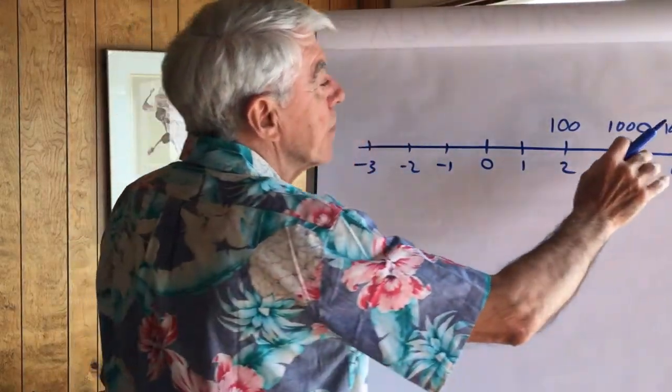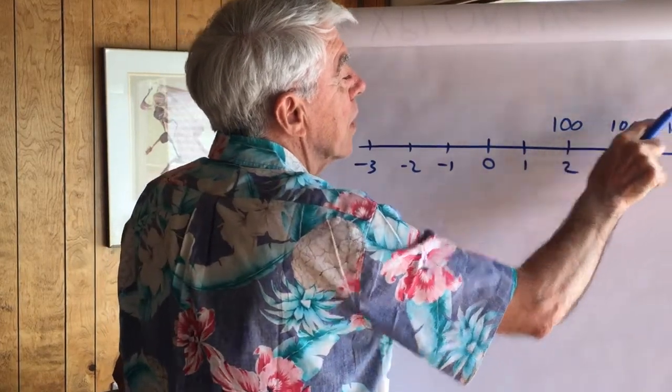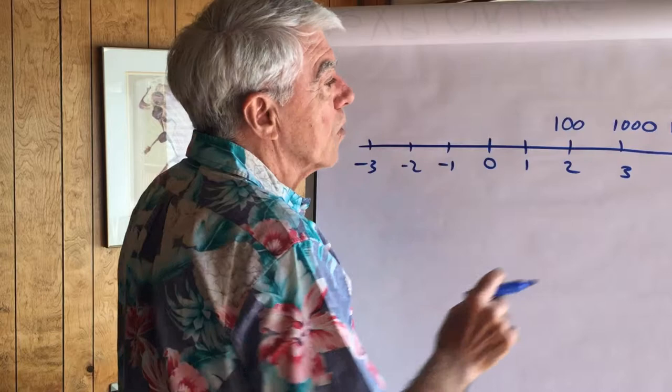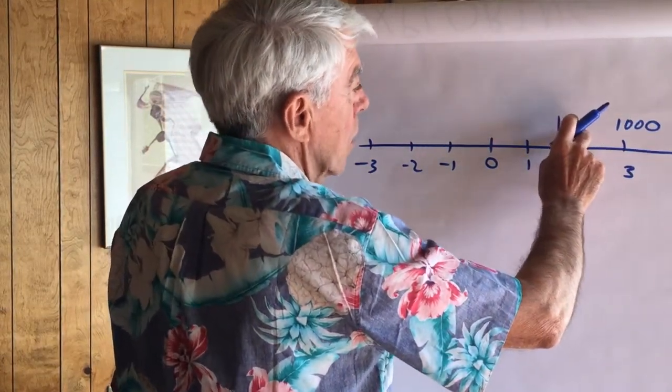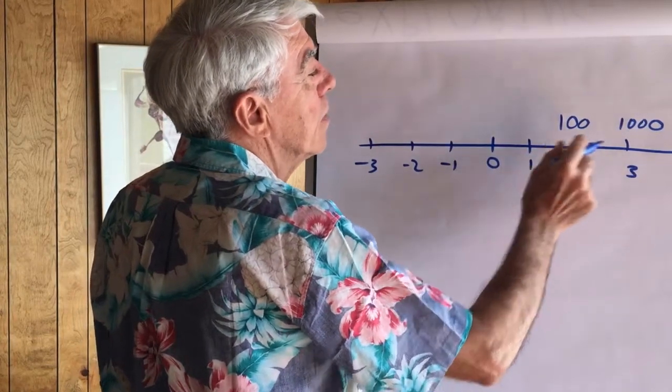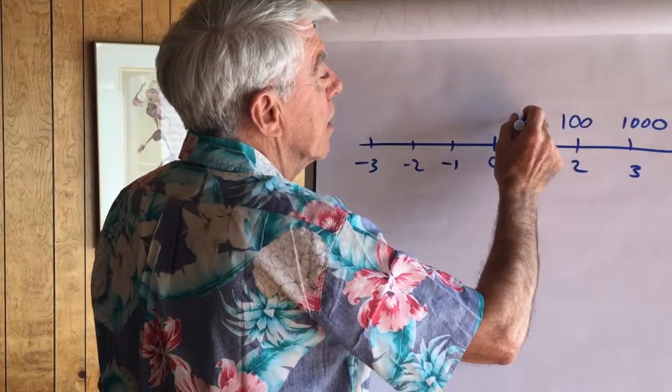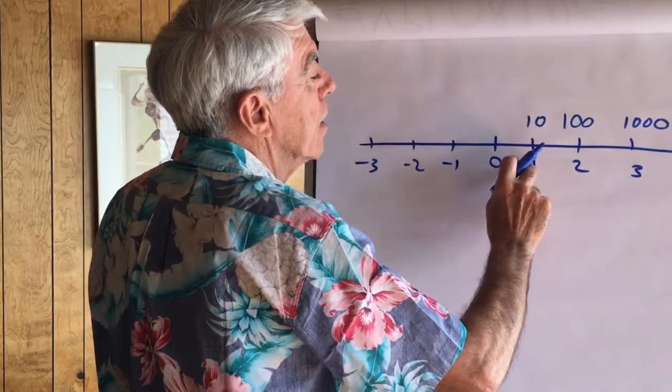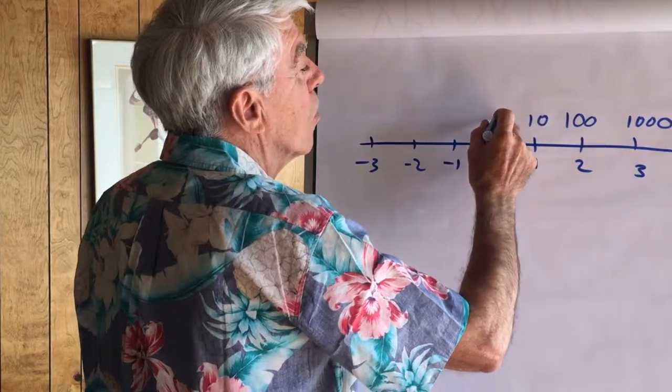Now, we can see that as we go to the right, each one of these numbers gets 10 times larger. Or, as we go to the left, 10 times smaller. So, a good guess for 10 to the first would be 10 times smaller than 100: 10. 10 times smaller than 10: 1.